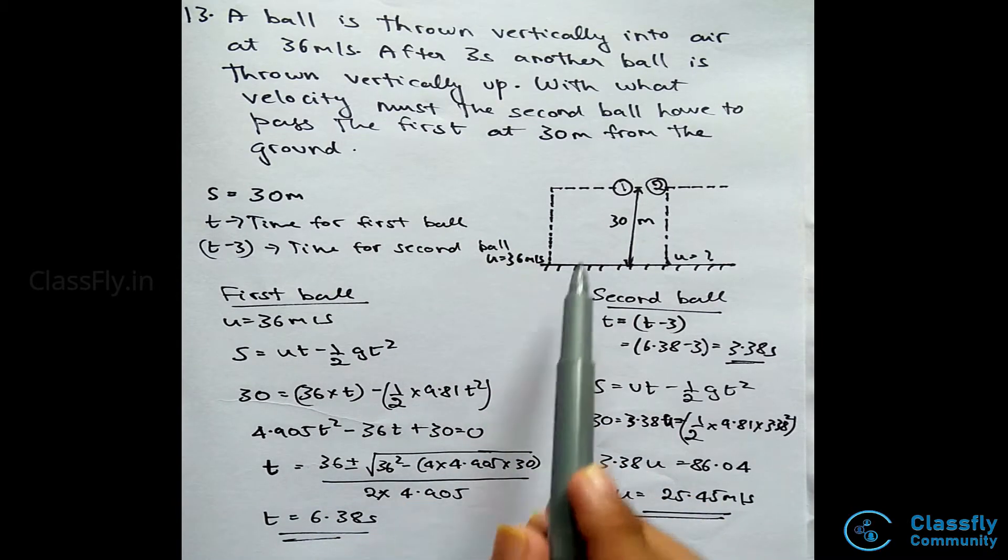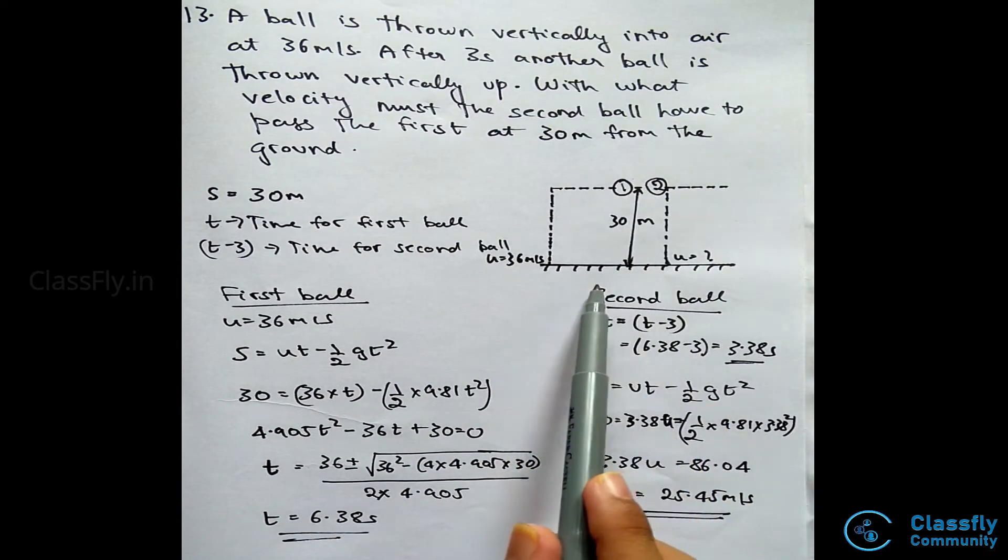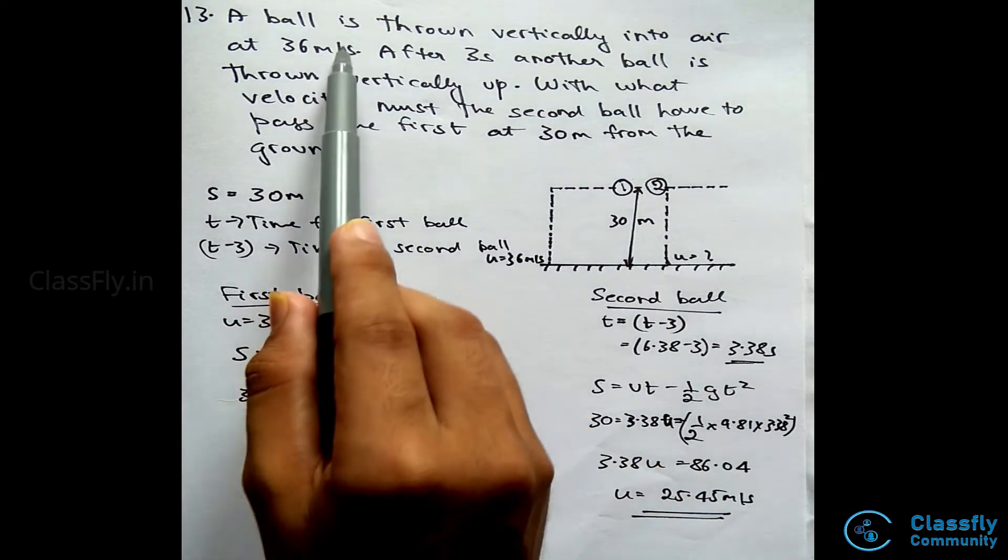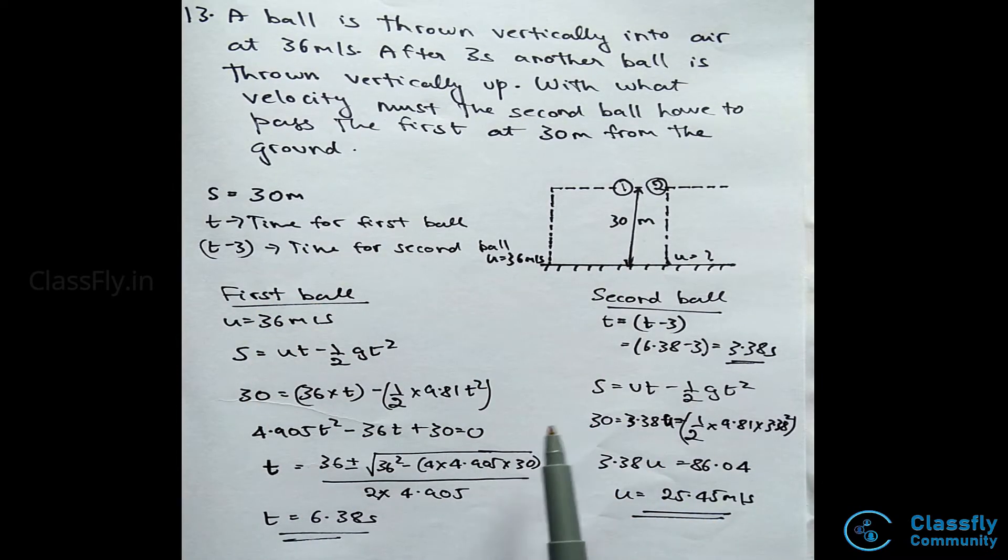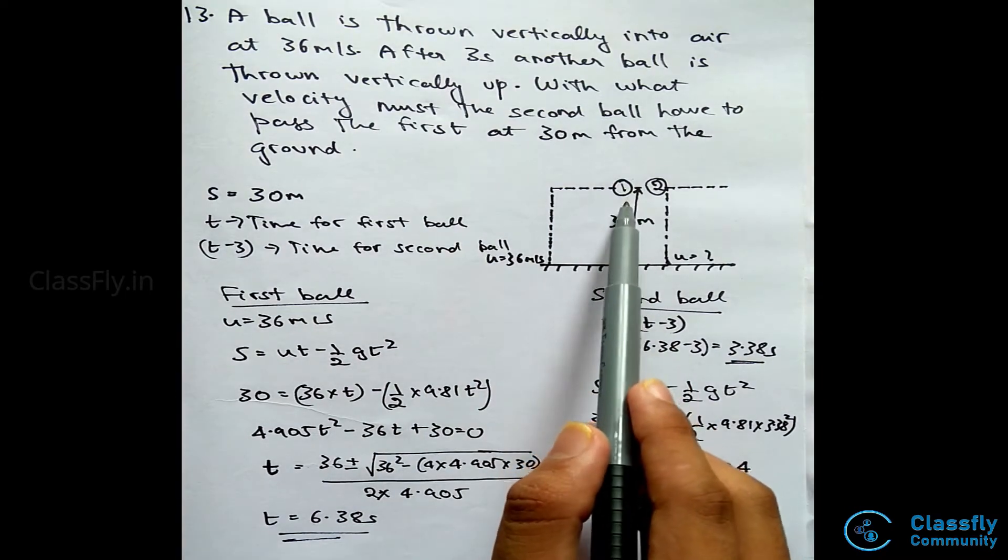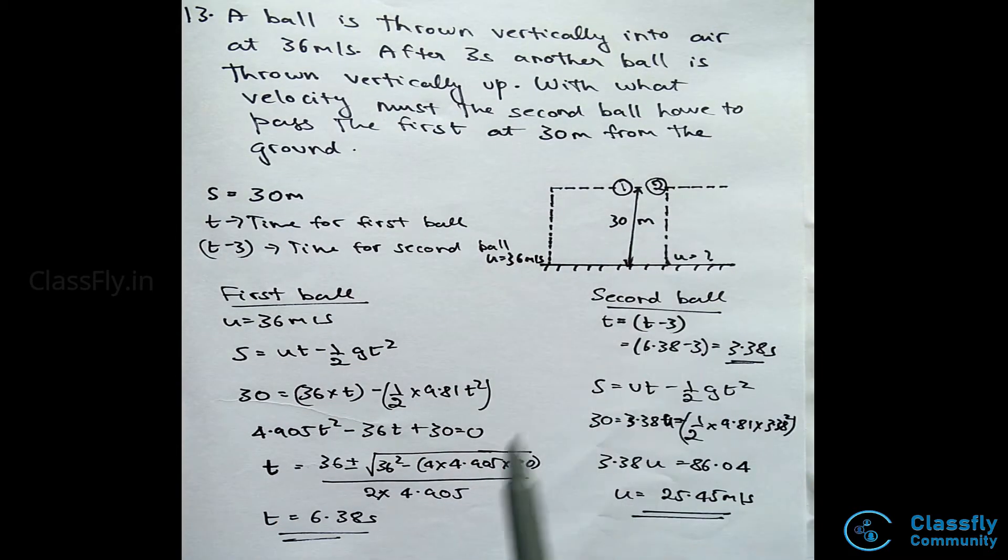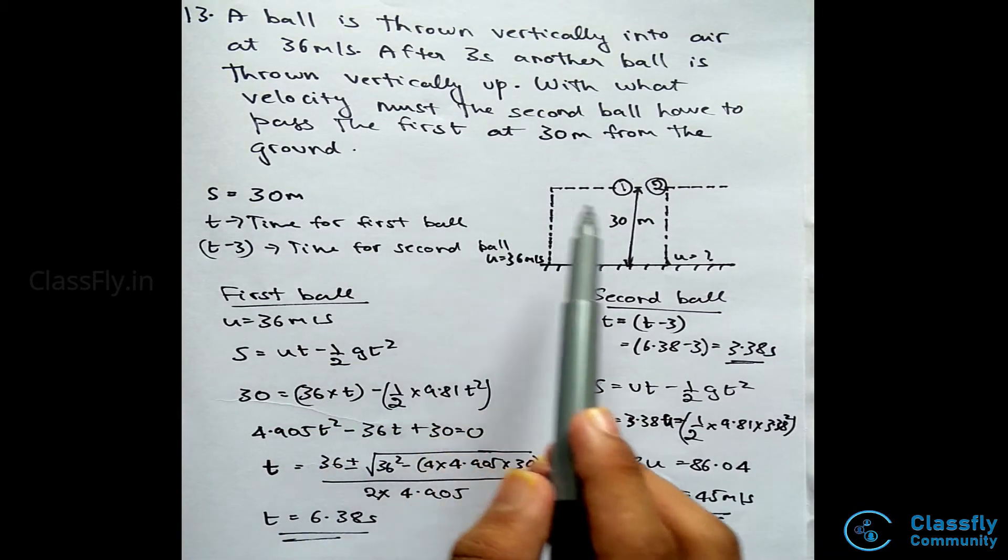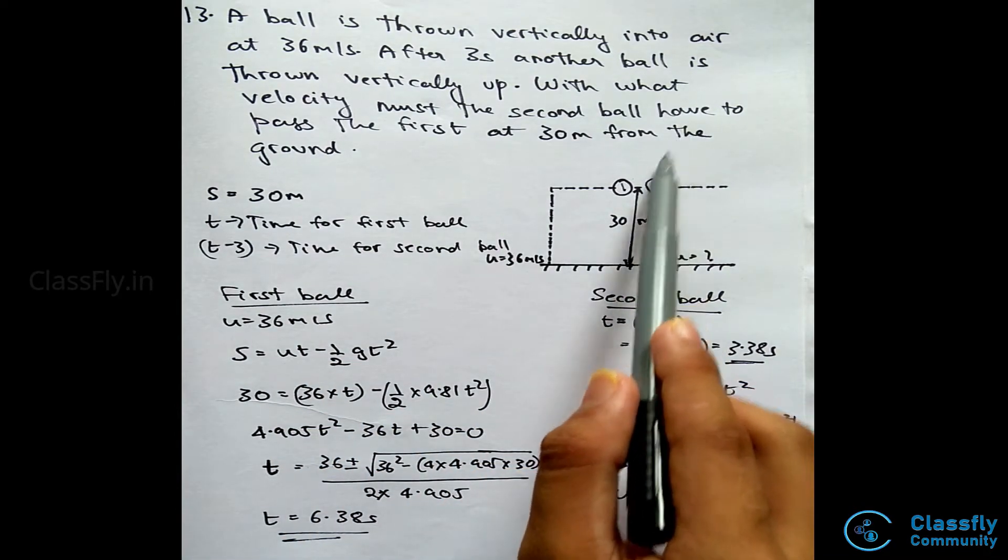In the question, they have given us that a ball, say ball one, is first thrown vertically into the air at a velocity of 36 meters per second. After three seconds of throwing the first ball, another ball will be thrown vertically upwards.